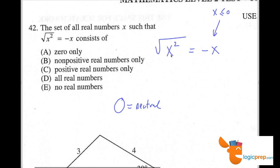If x is 0, these are the same. So we can cross off answers that don't have 0. All real numbers? Not necessarily. No real numbers? 0 works. Positive real numbers only? 0 works. 0 only, maybe. Non-positive?